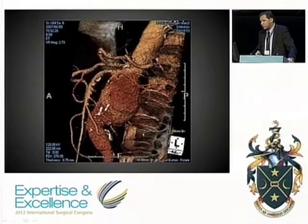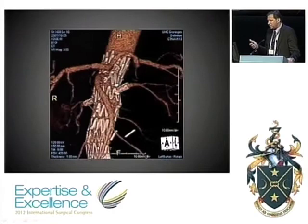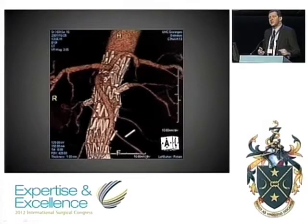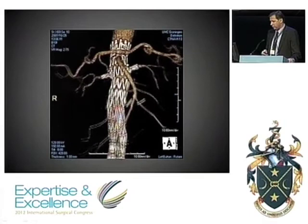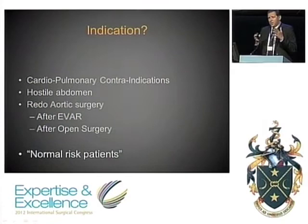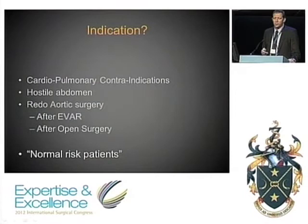We treated this patient under local anesthetic through two groins. The procedure took two hours — this is now a standardized procedure: insert the graft, catheterize the fenestrations, deploy the graft completely, then insert the stents inside the renal arteries. This patient has done very well and is still doing well. After accumulating more than 300 of these cases, we also began treating normal-risk patients, recognizing that the minimally invasive approach — avoiding dissection and visceral artery re-implantation — was a significant advantage.